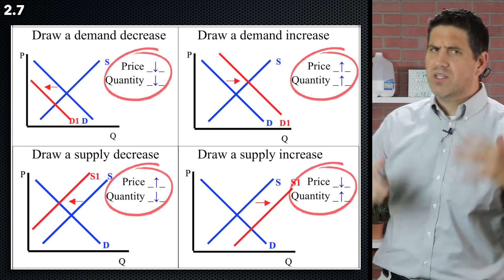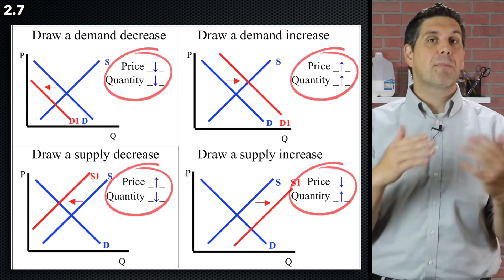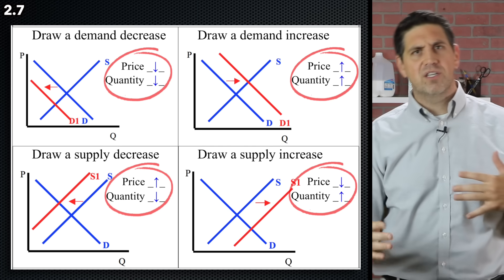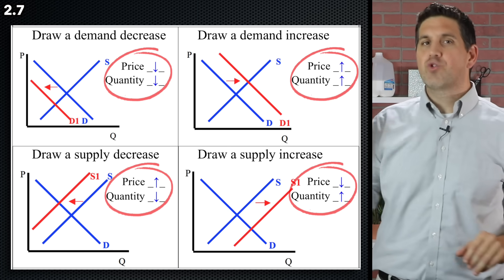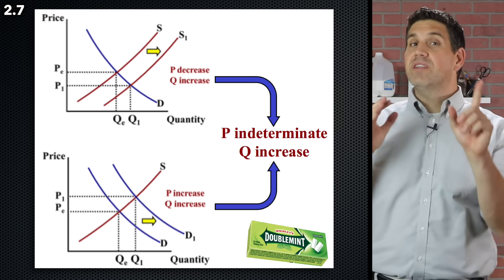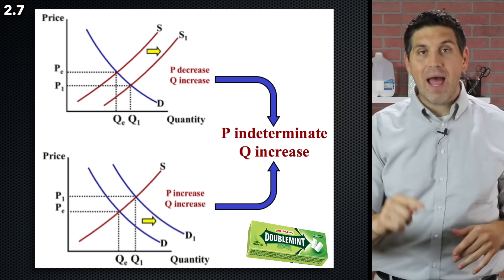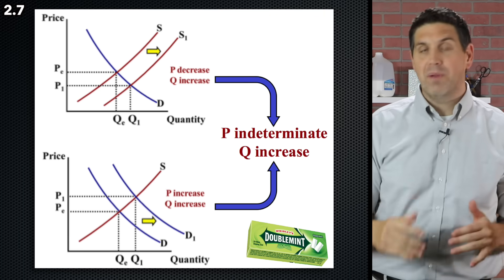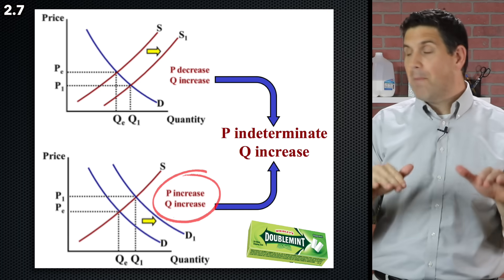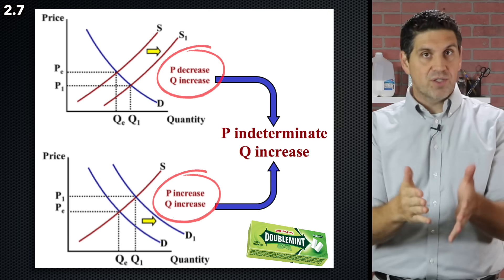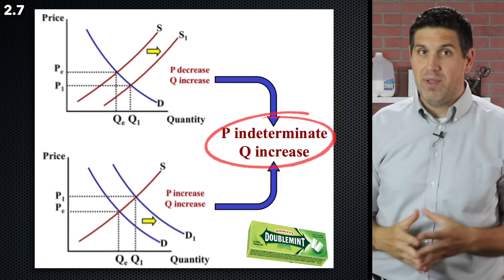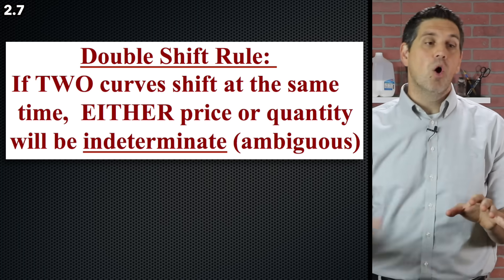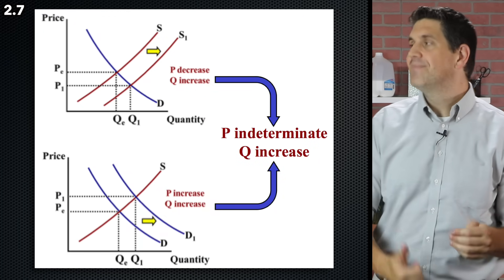There are only four things that can happen: demand up, demand down, supply up, or supply down. When in doubt, draw it out — draw the graph every single time for the right answer. For double shifts, when demand goes up and supply goes up simultaneously, quantity goes up but price is indeterminate. That's the double shift rule: when two curves shift at the same time, either price or quantity will be indeterminate. Draw the graph to find which one.